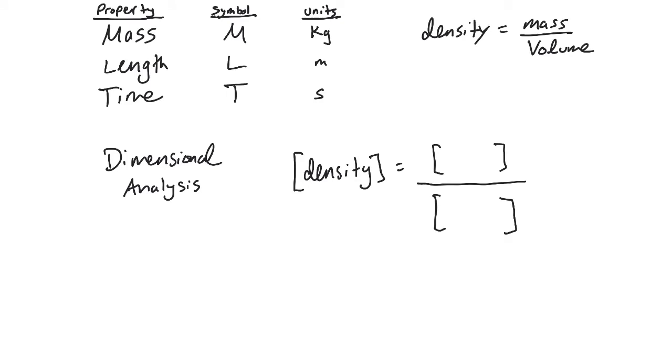Alright. So you probably know that density is mass over volume in terms of the simple formula that allows you to calculate density. But what are the dimensions and what properties do we use? Well, of course, mass. So we would use capital M here in the numerator and then volume. How would we represent that?